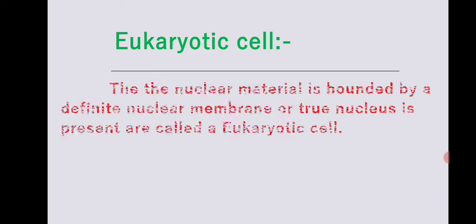In eukaryotic cells, the genetic material is covered by a nuclear membrane. 'Eu' means well-developed and 'karyon' means nucleus. The nuclear material is bounded by a definite nuclear membrane, meaning a true nucleus is present. Cells with a true nucleus are called eukaryotic cells, and the organisms are called eukaryotes.